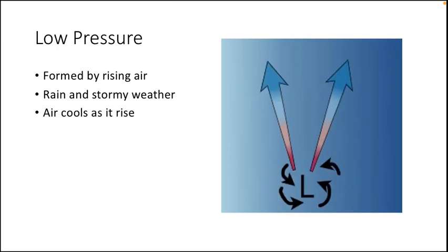Low pressure is the opposite — it's formed by rising air, and it generally leads to rain and stormy weather because the air rises, cools, and condenses, as air is cooler higher up. That turns into rain and storm clouds, and at times, because of the pressure gradient between high and low pressure, it can lead to very strong winds. For low pressure to form you want diverging air at upper levels and converging air at the surface, which you can see in this diagram.